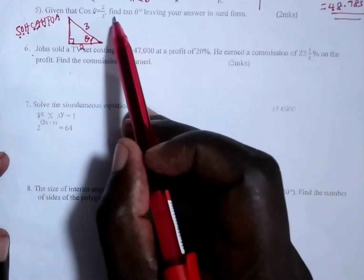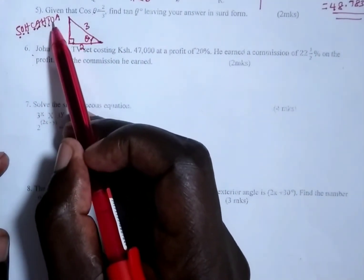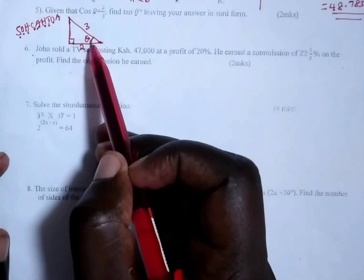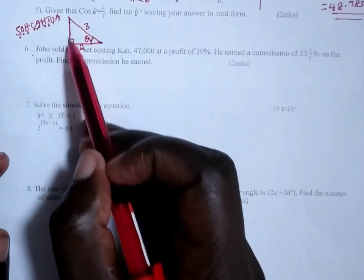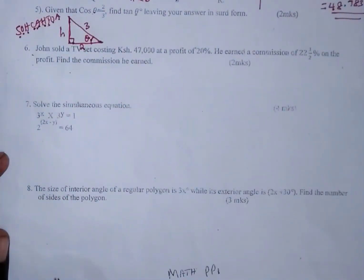We are supposed to find tan θ. And remember, tan is opposite over adjacent. According to the angle here, the opposite side is this one, which is the height. And therefore, we need to find the size of that height.